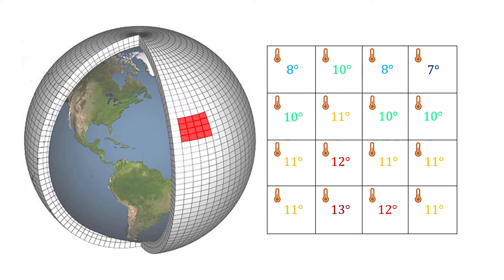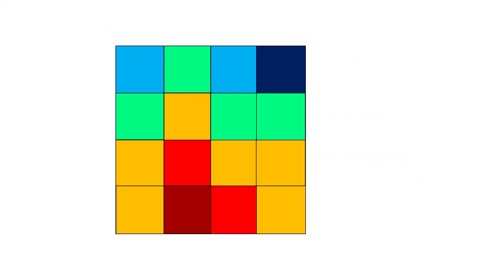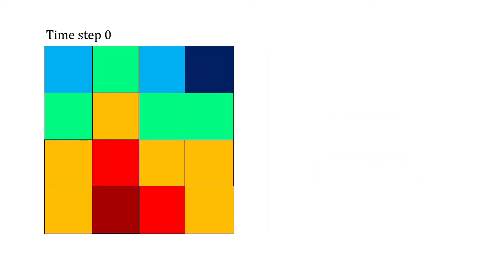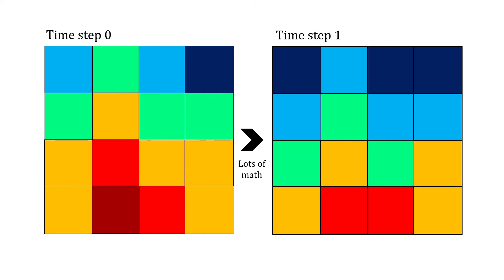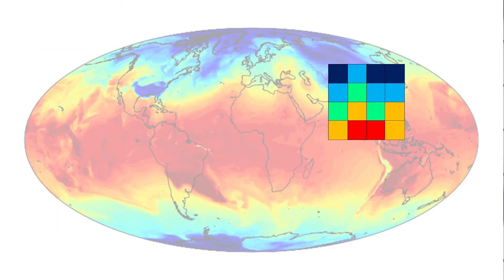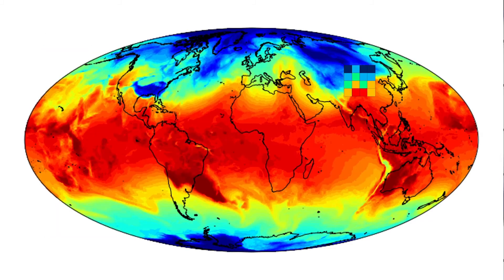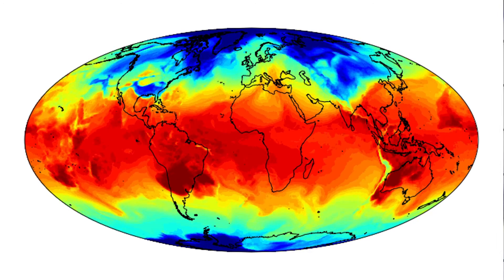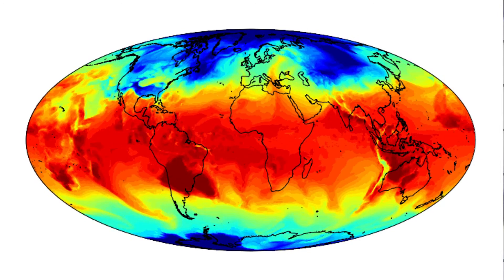Now, if we were to move forward in time, each cube's temperature, wind, and humidity will change based on solving complex equations that represent the movement of fluids, energy conservation, chemical reactions, whatever it may be. If we keep going forward in time, that becomes a simulation — a representation of how the atmosphere behaves.